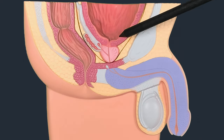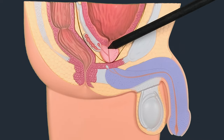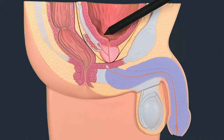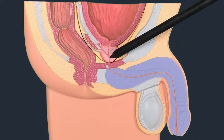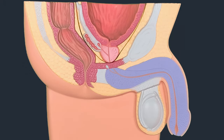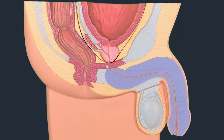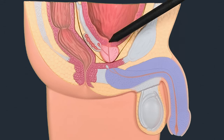Now let's look at the urethra. You can see this line starting from the lumen of the bladder going all the way down — that is the urethra. It has different parts named by the regions it passes through. At the bladder neck this is the pre-prostatic urethra. The moment it enters and runs through the substance of the prostate gland, we call it the prostatic urethra. The prostatic urethra receives a pair of ejaculatory ducts entering from the posterior surface of the gland.